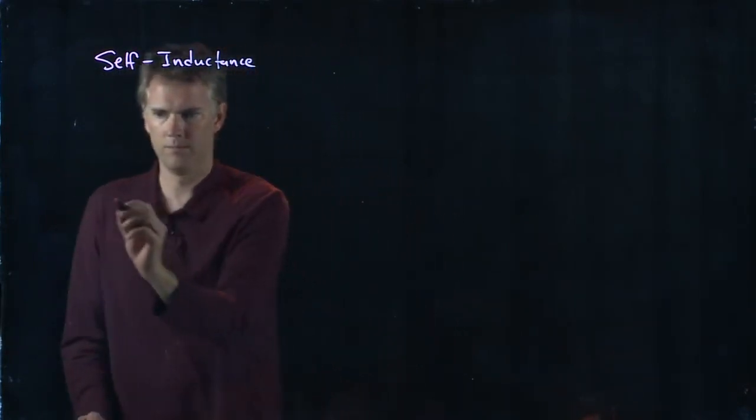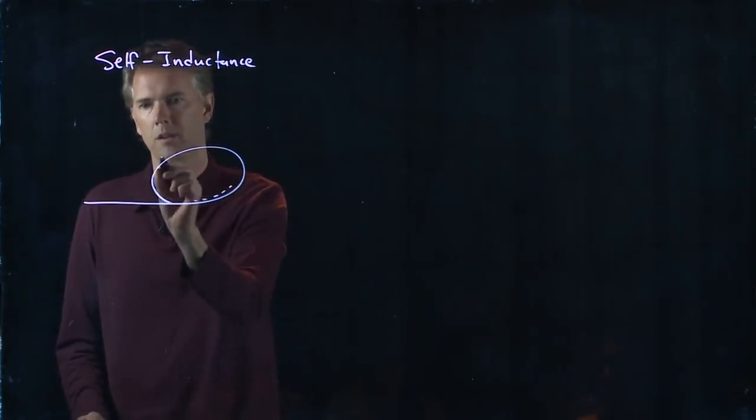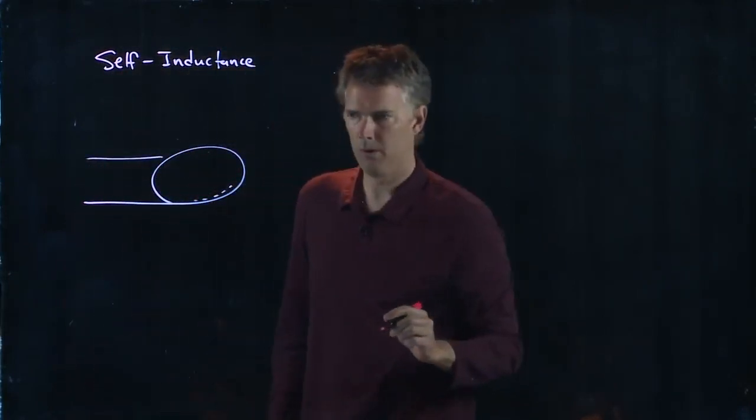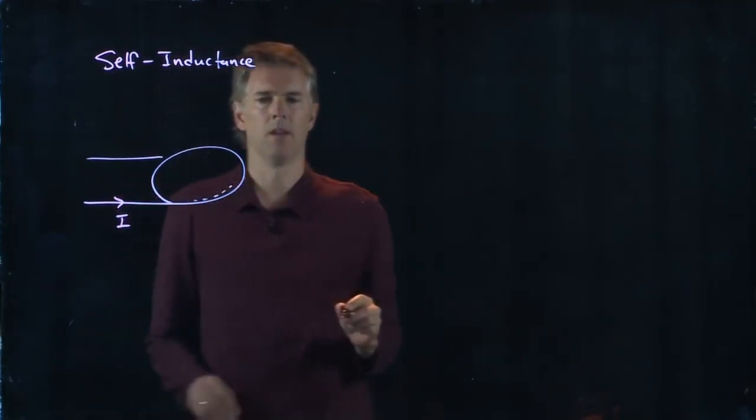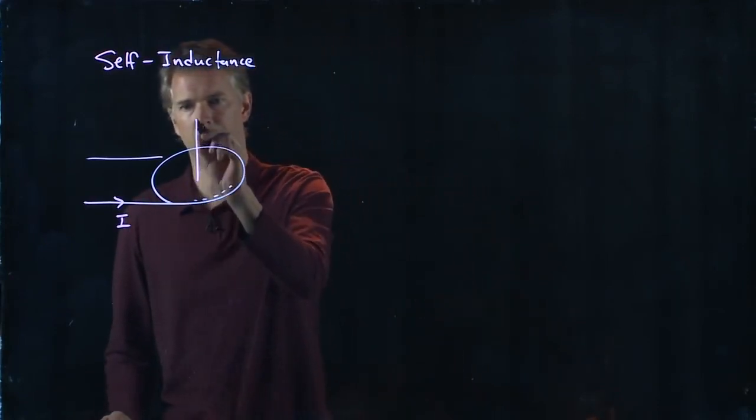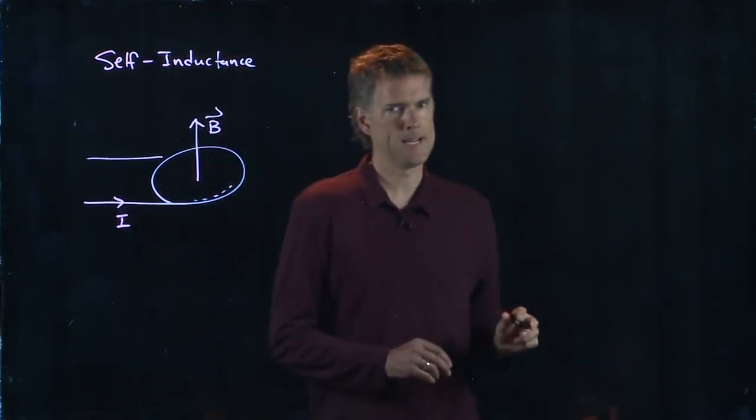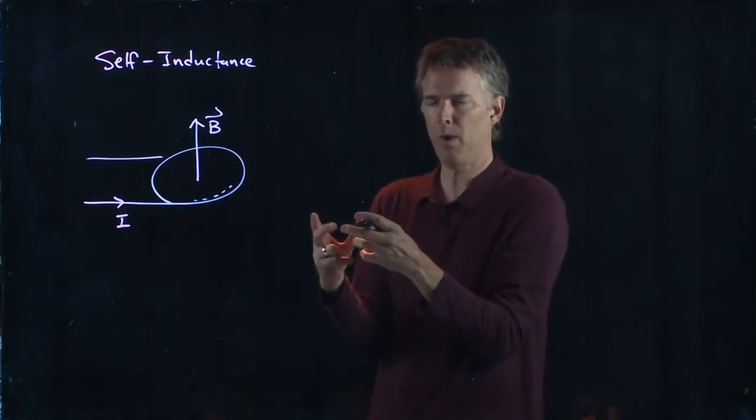If I take a coil and let's just do one loop for simplicity, here's my coil and I run some current through it, I know that I generate a B field. But the coil itself says wait a minute.